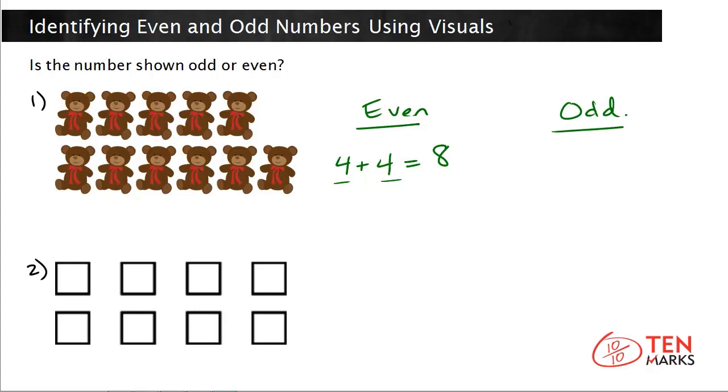An odd number cannot be written as a doubles fact. For example, the number 9 is odd. You can't write 9 as a doubles fact.